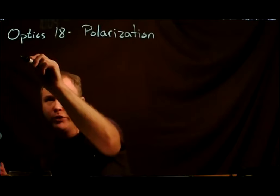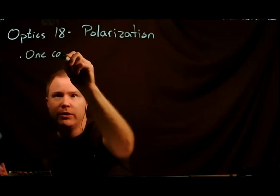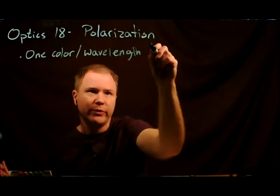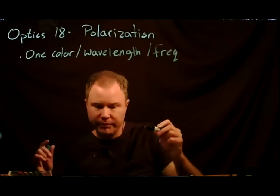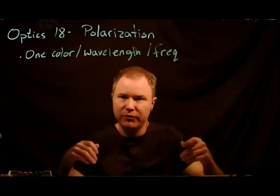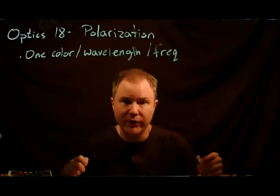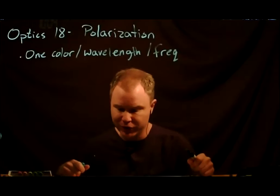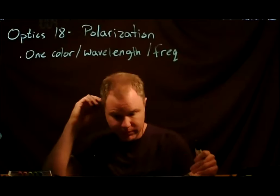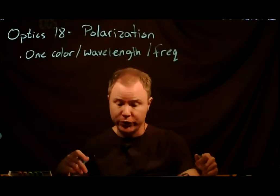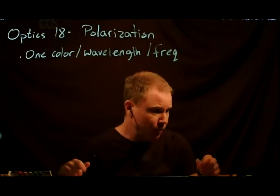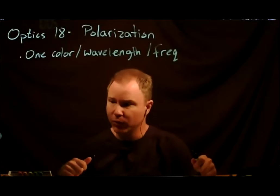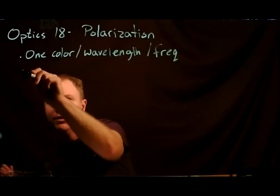Because we're starting to look at the vector nature of the field, we're going to simplify everything else for a while. We'll work with just one color — one wavelength, one frequency. Toward the end of the class, we'll get into fields composed of a whole slew of different wavelengths and frequencies and what happens when we pass that through interferometers. I'll also keep the spatial structure of the wave very simple. Before we were talking about Gaussian modes, but we'll go back to the simplest spatial structure: just a plane wave.